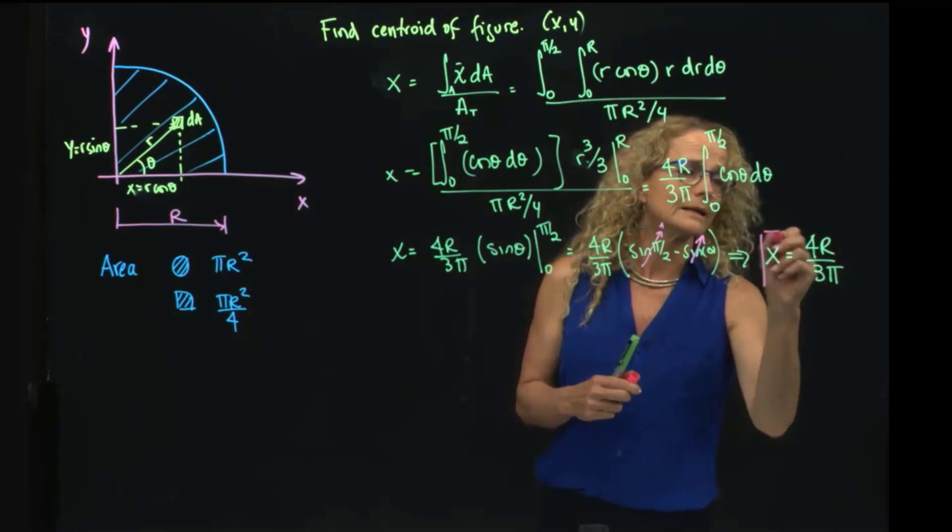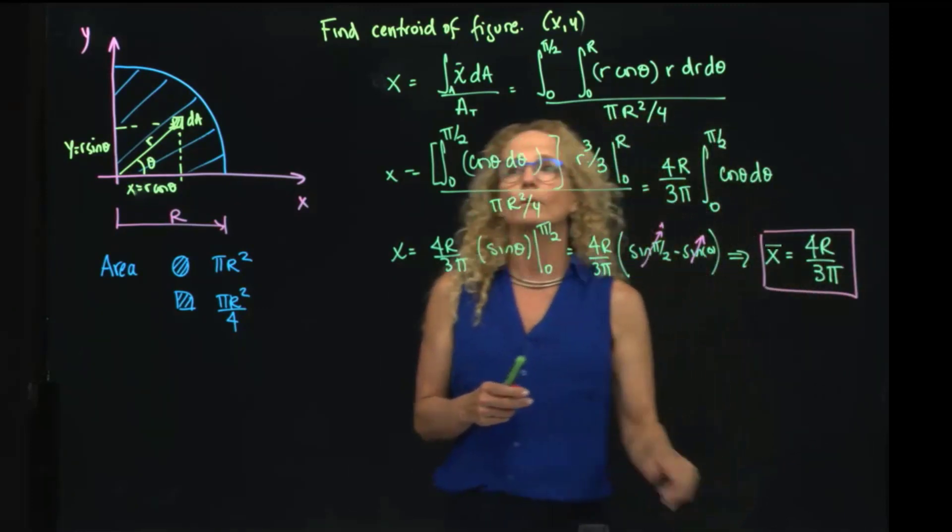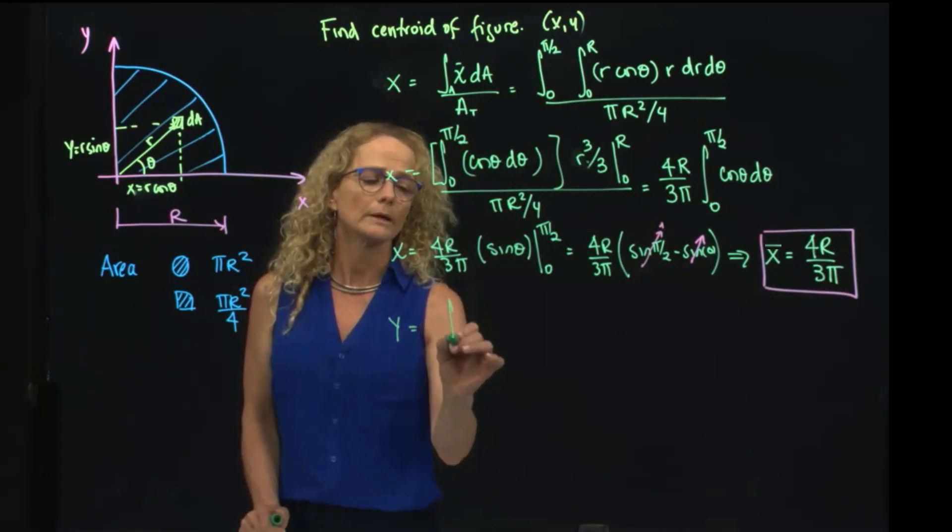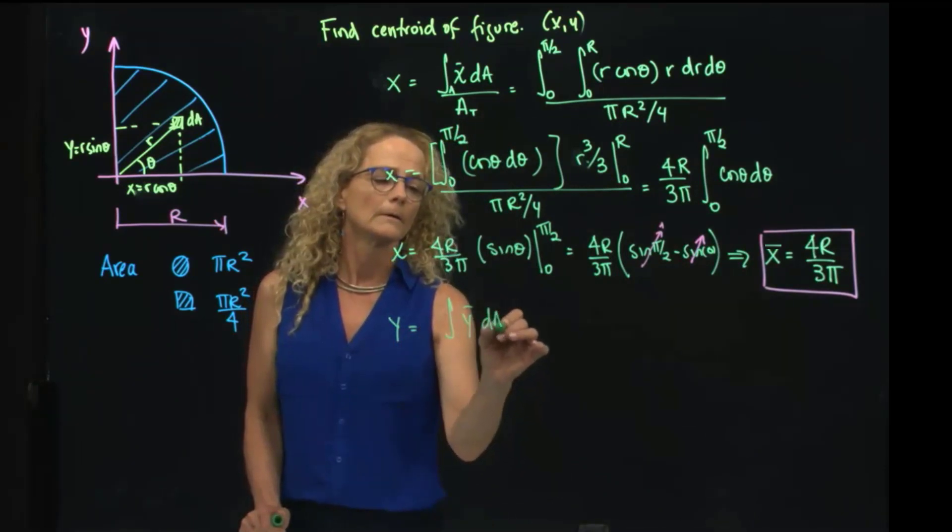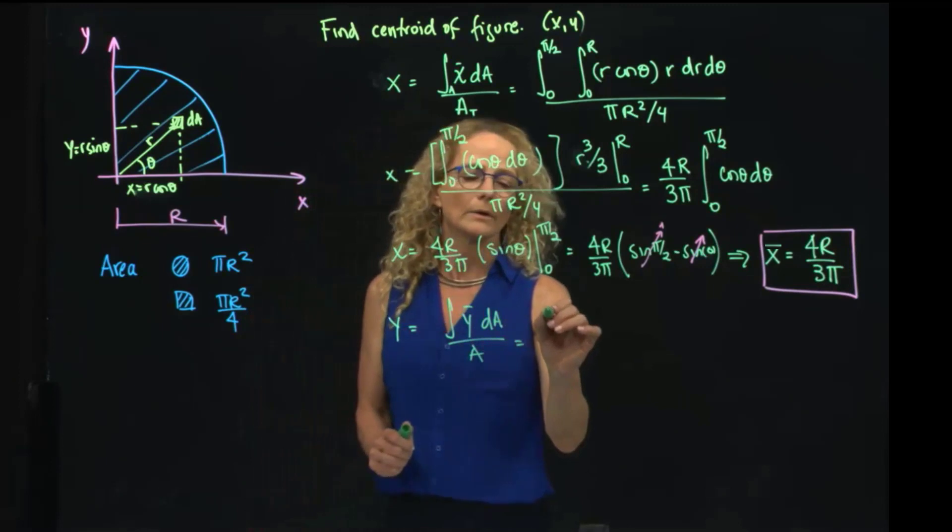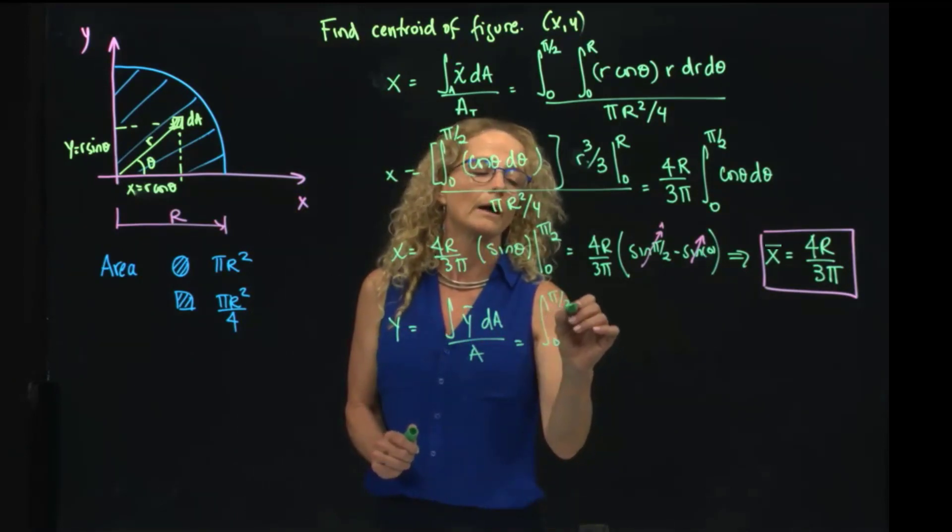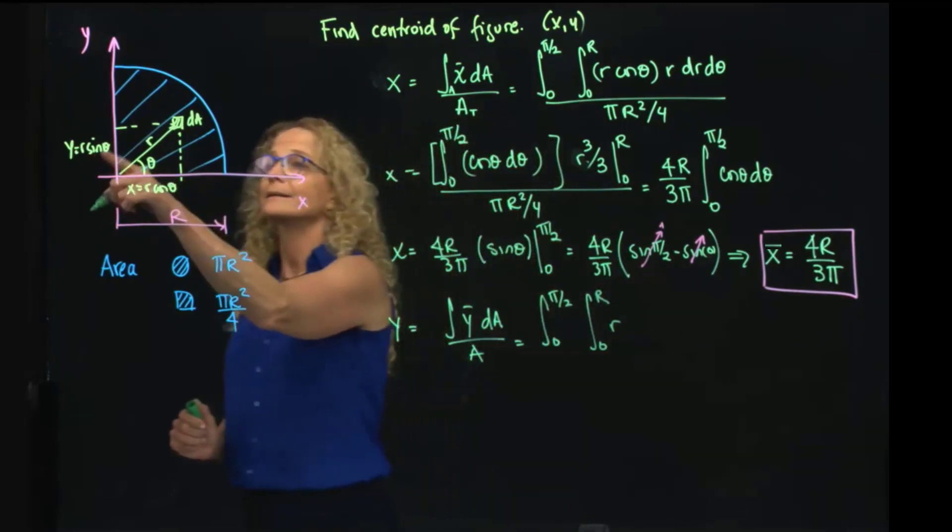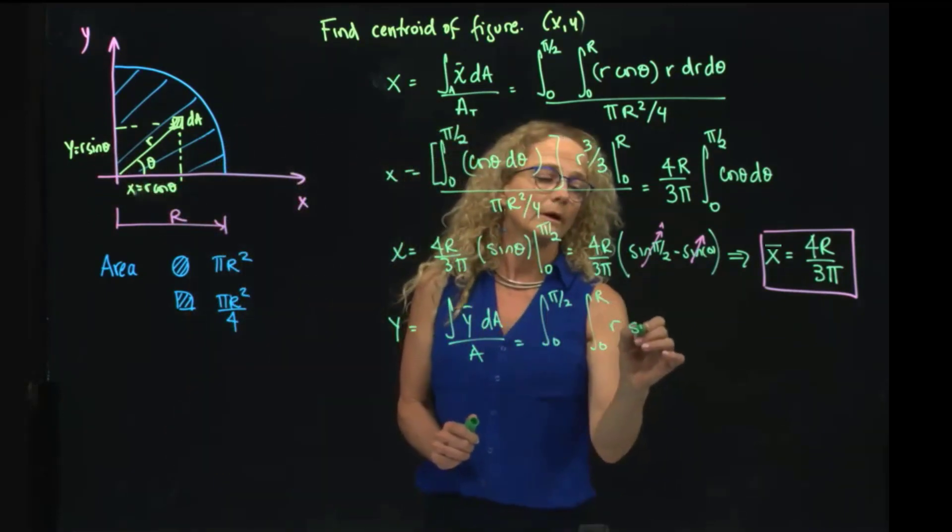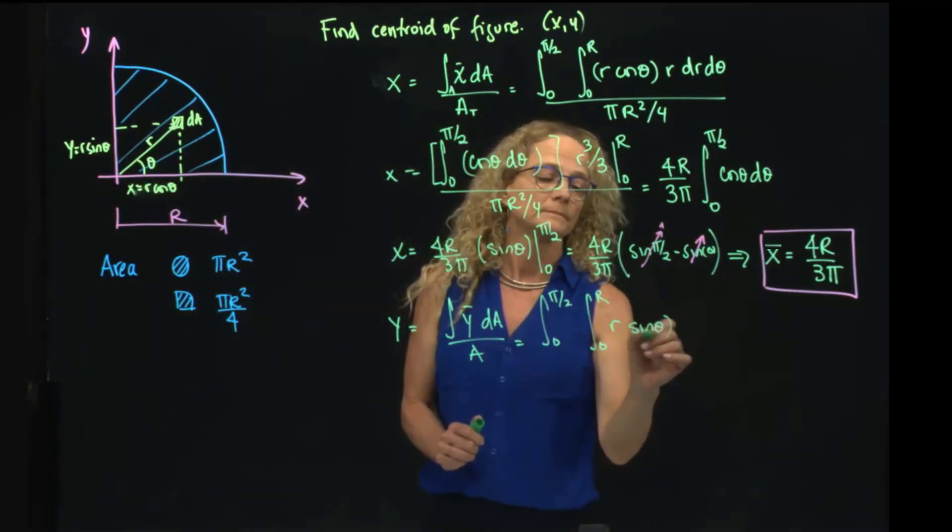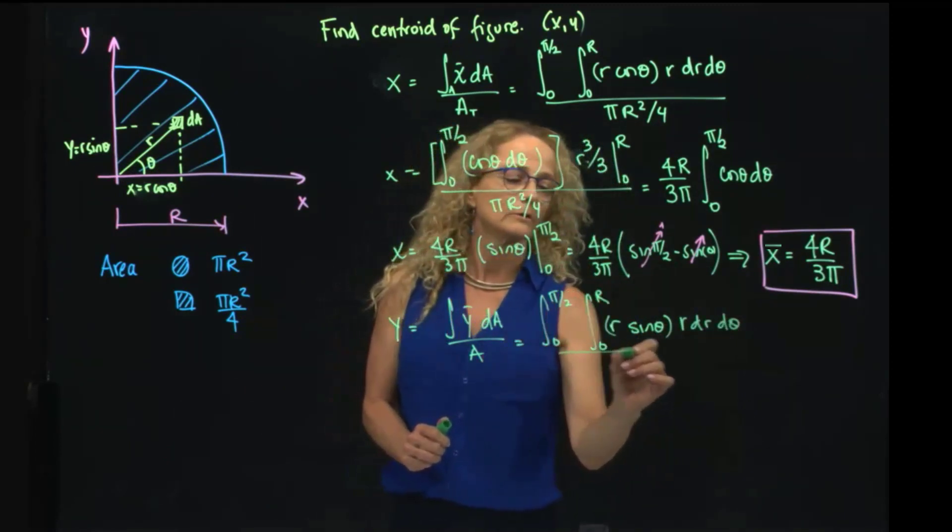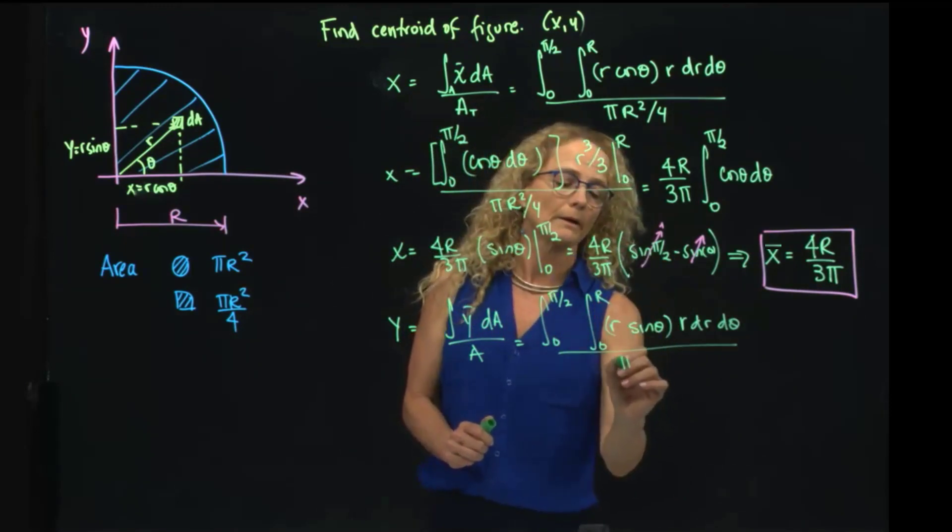We will do exactly the same for my y direction, and it's very similar, so very quickly. I will now integrate from 0 to pi half, 0 to r. Now y is r sine of theta, so r sine of theta, r dr dtheta, divided by the total area, which is pi r squared over 4.